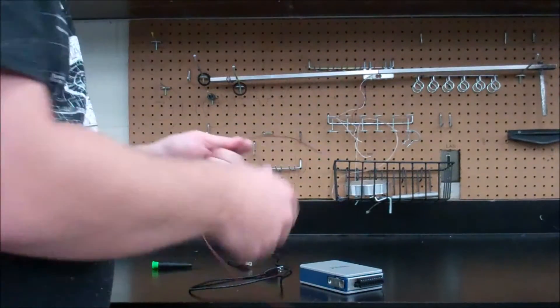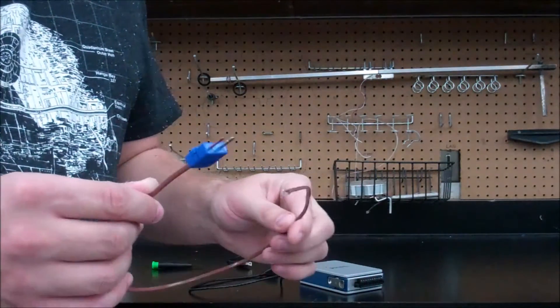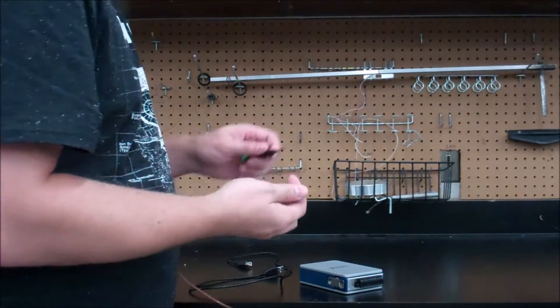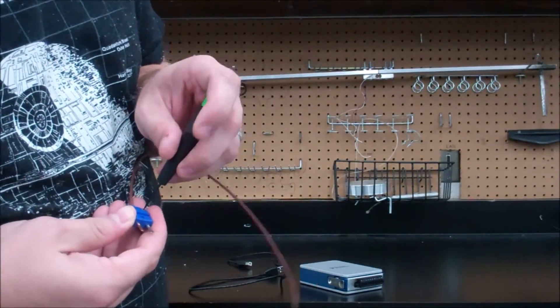Now the thermocouples we typically use is the T-type, and some of them have connectors on it. So if you have a connector on it you're going to have to remove it by just unscrewing the terminals.